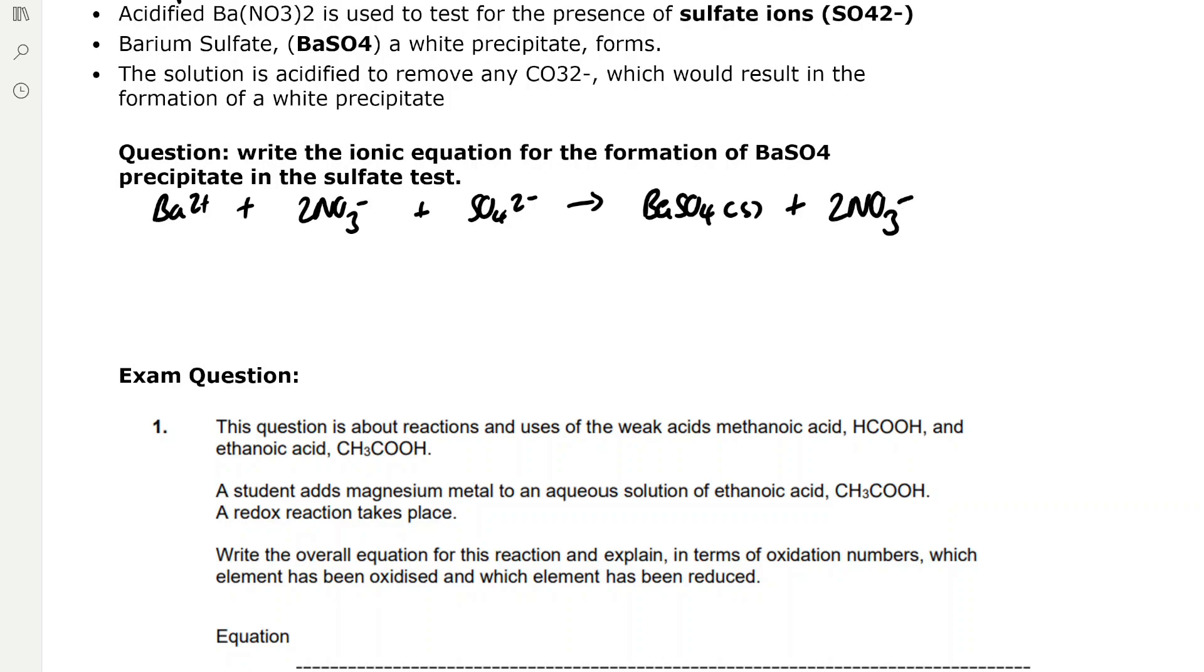You can see that NO3- is on both sides, so we can cancel them. That leaves us with Ba2+ plus SO4 2- forming barium sulfate, which is going to be a solid precipitate. And these are both aqueous ions.